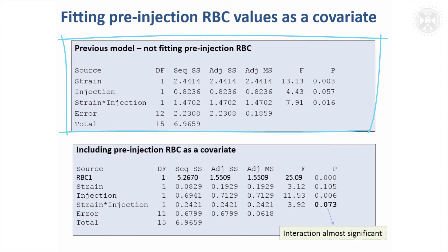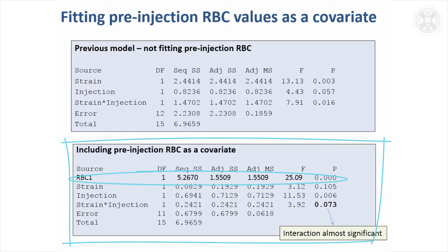This is the original model with p-values for each effect. Now including red blood cell count in the model adds a row for red blood cell count, which is highly significant. This indicates a lot of variability in post-treatment red blood cell counts can be accounted for by pretreatment levels, making the model more efficient and adjusting the tests for strain, injection, and their interaction for these pretreatment differences. The interaction is now not quite significant, but still borderline, so we're still justified in investigating whether injection has an effect for individual strains. Generally, including pretreatment data in the model is beneficial as it improves efficiency.